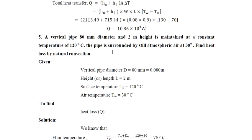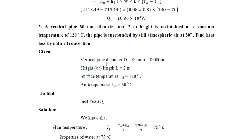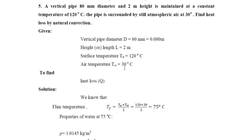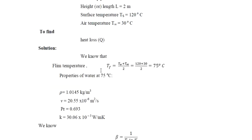The second numerical: a vertical pipe of 80 mm diameter and 2 m height is maintained at a constant temperature of 120°C, surrounded by atmospheric air at 30°C. Find the heat loss by natural convection. For this vertical pipe, diameter = 0.08 m and length (height) = 2 m. Surface temperature T_s = 120°C, air temperature T_∞ = 30°C.